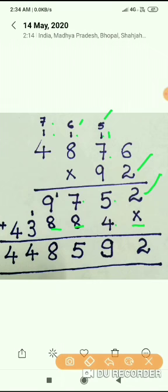Now we got two partial products. Let us add them. 2 + 0 = 2, 5 + 4 = 9, 7 + 8 = 15, 9 + 8 = 18, 3 + 1 = 4, and 4. So the answer is 448,592.